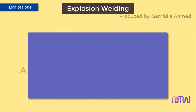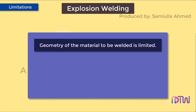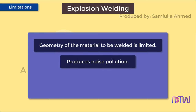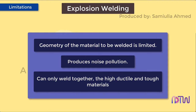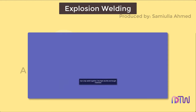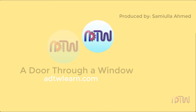Limitations: due to the configuration of the process, the geometry of the material to be welded is limited — that is, the design of the joint is limited. It produces noise pollution. It can only weld together high ductile and tough materials. This is how the explosion welding process works.